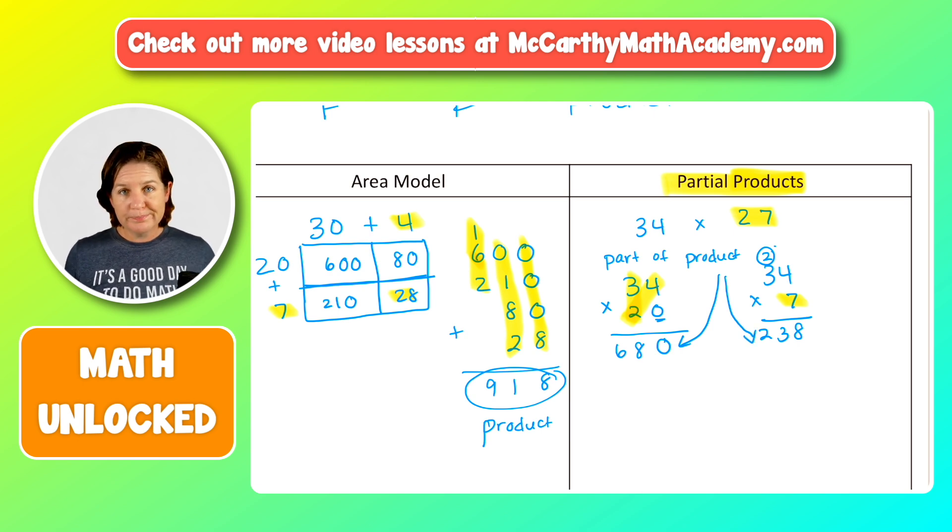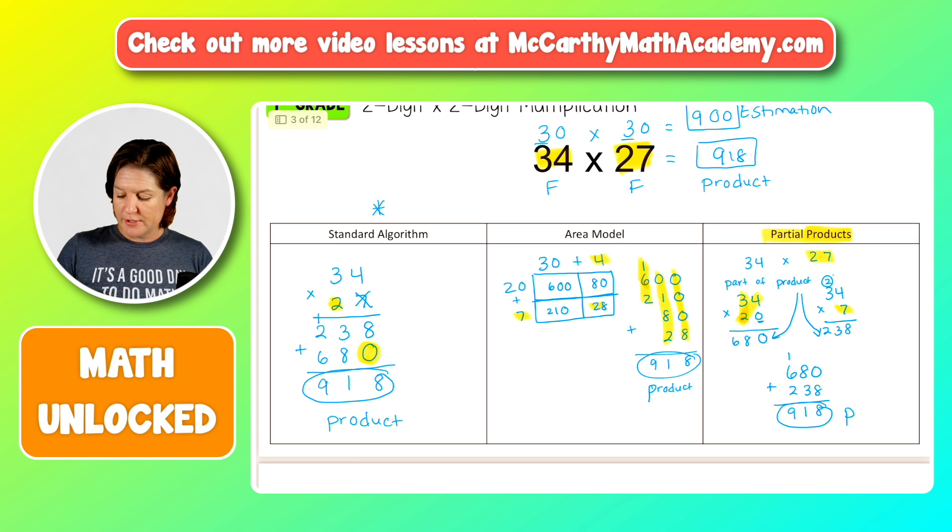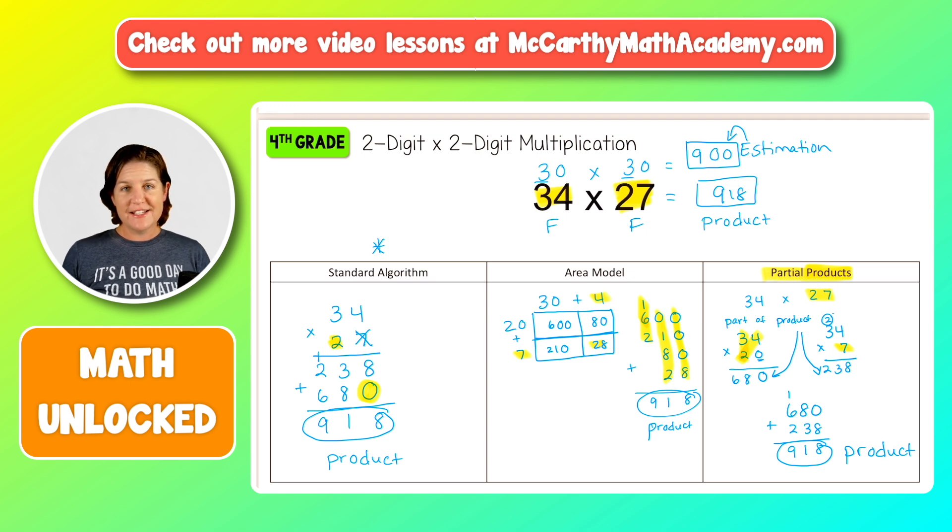So 680 plus 238. There we go. And then we just add them up. Eight tens plus three tens is 11 tens. Woo. It's high up here. Nice landing dude. 100 plus 600 is 700. 700 plus 200 is 900. And again, we arrive at our final product of 918, which again, look at that. 918 is real close to our estimation of 900. So those are three different ways.